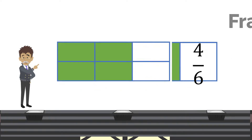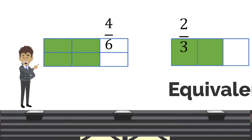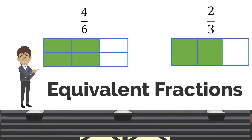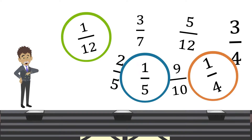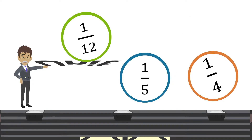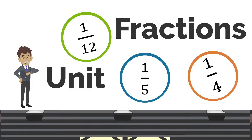When two fractions represent the same amount, they are called equivalent fractions. When a fraction has a 1 as the numerator, this is called a unit fraction. It represents one part out of the whole.